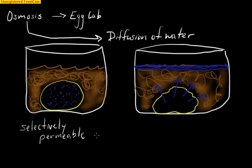And it does that by the size of the molecules that we're talking about. So selectively means it's only going to let certain things in. Permeable means it has holes in it. The size of the molecule determines whether or not it will be able to fit through those holes in the membrane.